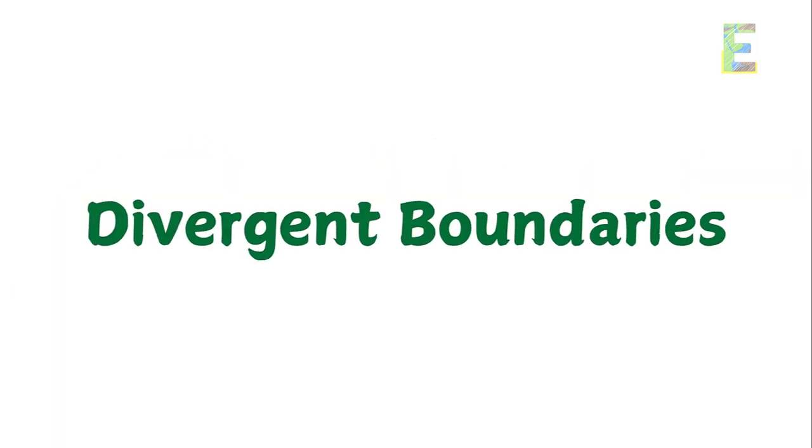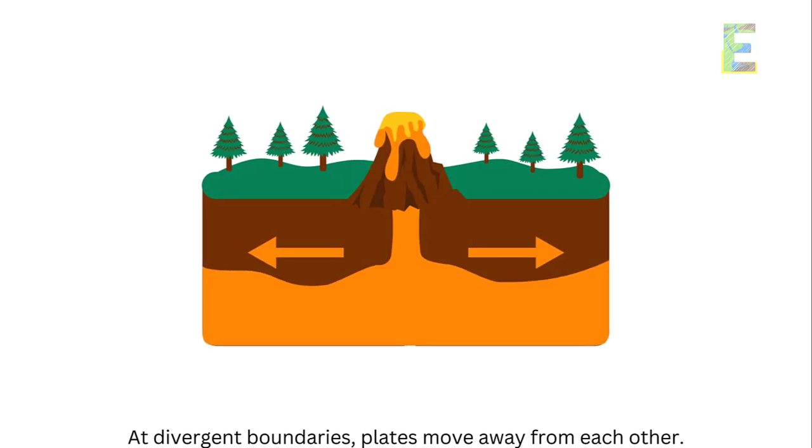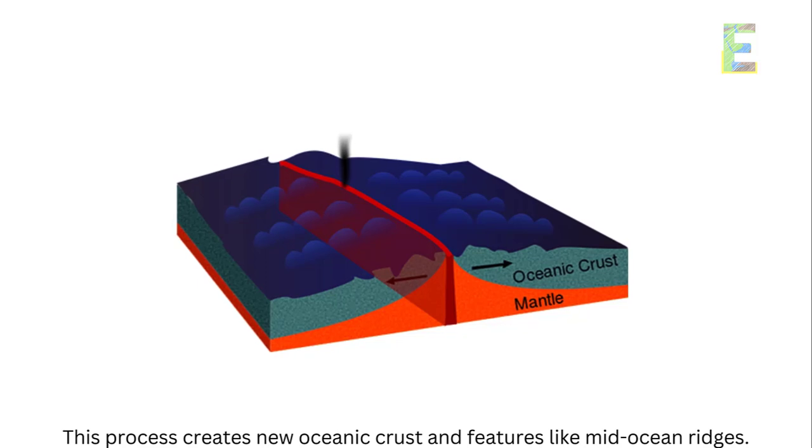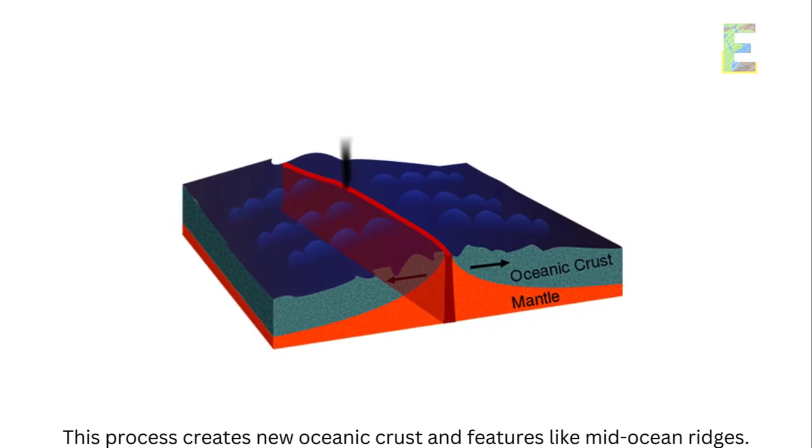Divergent boundaries. At divergent boundaries, plates move away from each other. This process creates new oceanic crust and features like mid-ocean ridges.